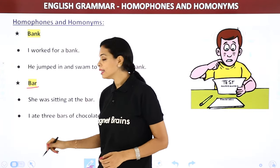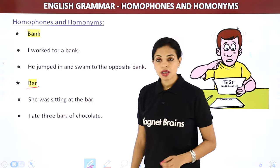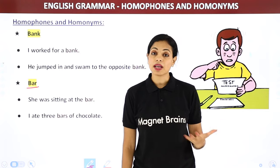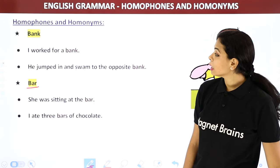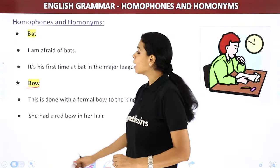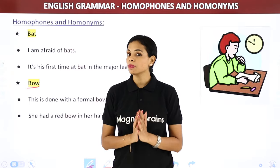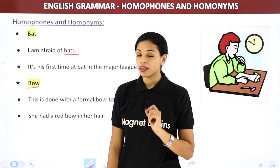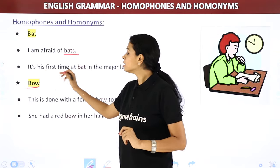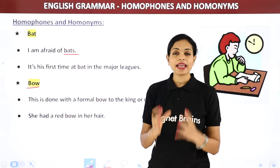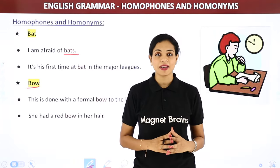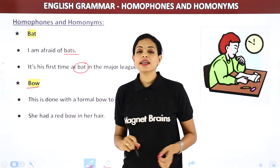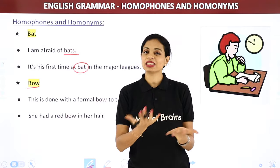Next: 'bar' — we've seen this too. 'She was sitting at the bar' (a place/venue), and 'I ate three bars of chocolate' (a chocolate bar — the full slab). Next: 'bat' — 'I'm afraid of bats' (chamgadad — the animal), and 'it's his first time at bat in the major leagues' (batting in sport). 'He has a bat, I have a ball, let's play cricket.'